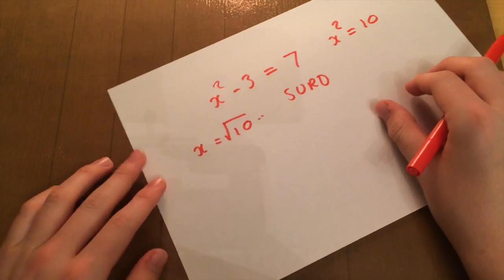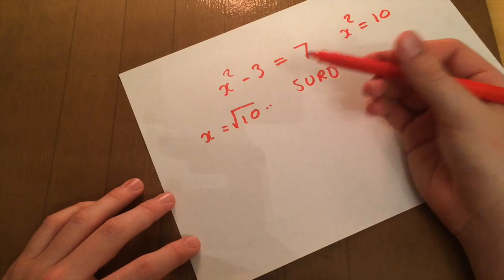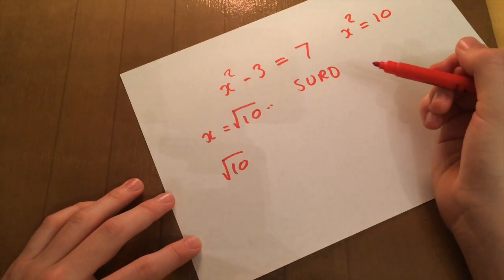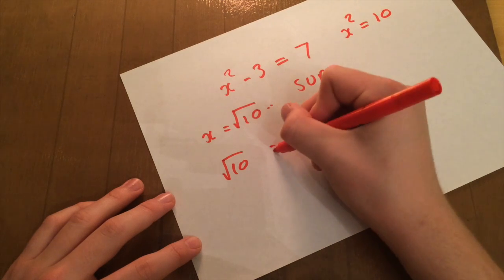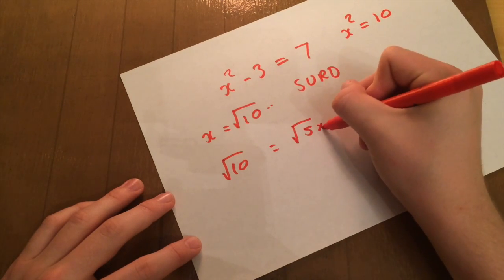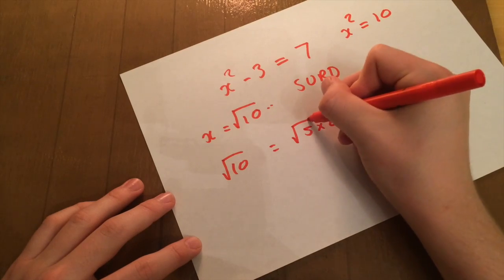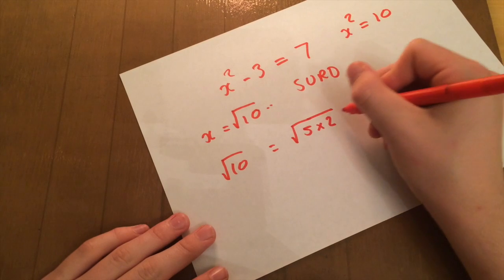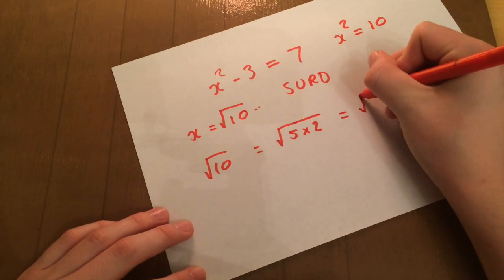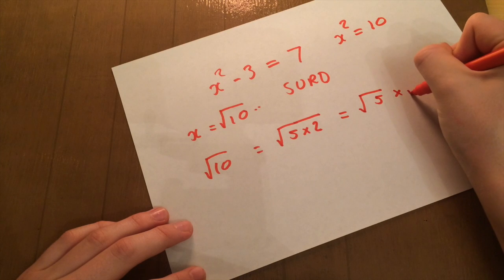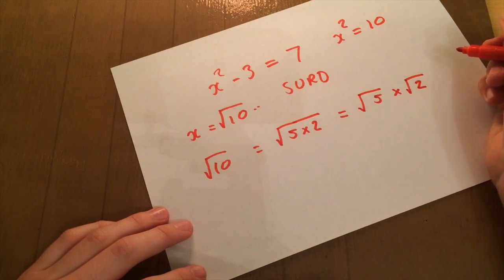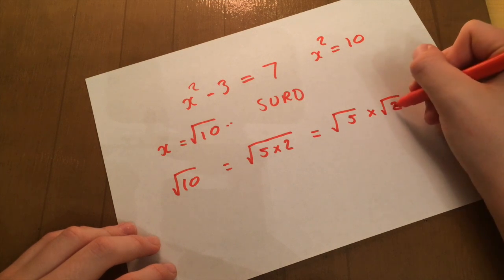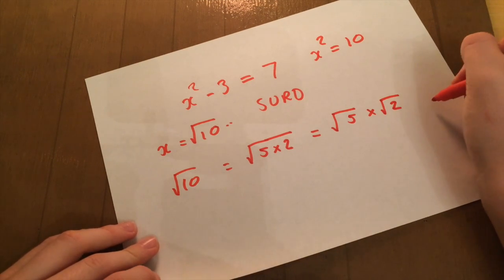However, these surds also have their own rules on their own. So if we take, for example, root 10, this can also be written as root 5 times 2. Because if you think about it, 5 times 2 is 10, and that gives you 10. But you can now simplify this down to root 5 times root 2. Which just means if you're in another sort of equation where you have another root 2, you can take this root 2 to it and times it to give you just 2.